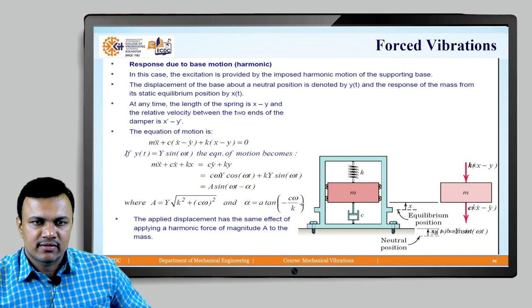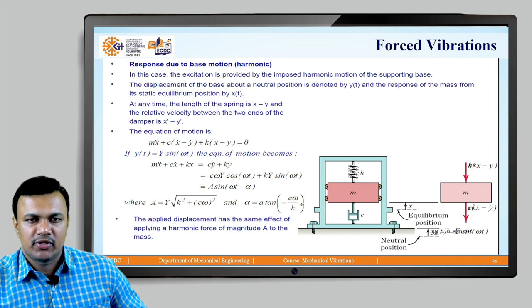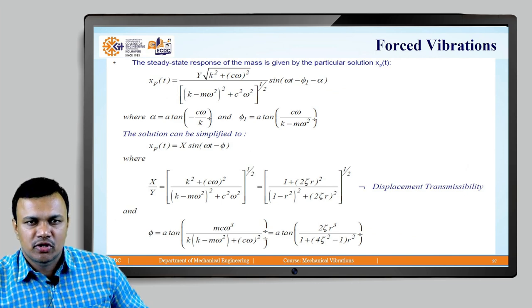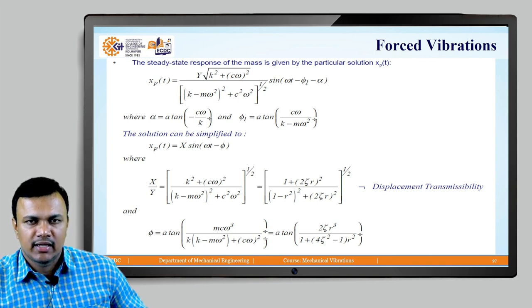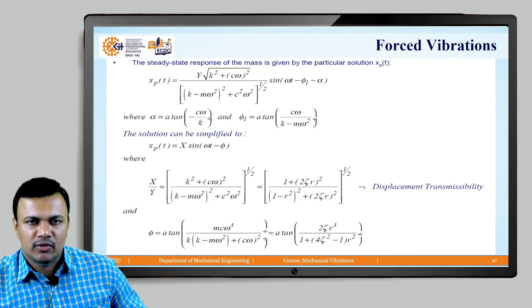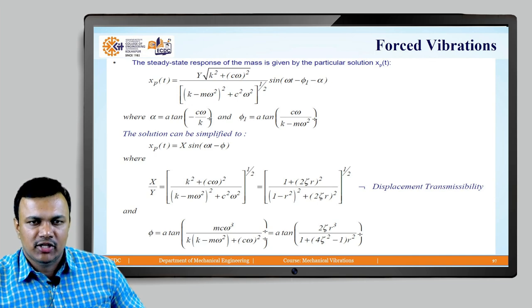The applied displacement has the same effect as applying a harmonic force of magnitude A to the mass. The particular solution equals Y*√(k² + (cω)²) divided by √((k - mω²)² + (cω)²), multiplied by sin(ωt - φ_n - α), where α = arctan(-cω/k) and φ_n = arctan(cω / (k - mω²)). This simplifies to x_p = X*sin(ωt - φ), and we can write x/Y as √(k² + (cω)²) / √((k - mω²)² + (cω)²).